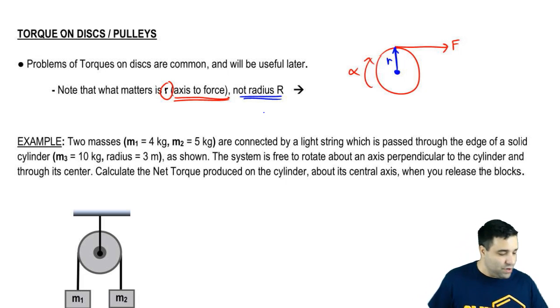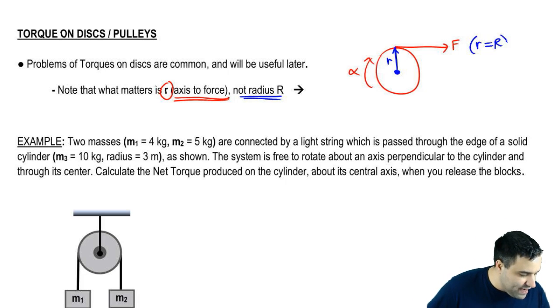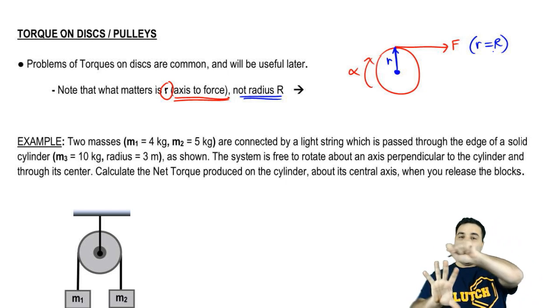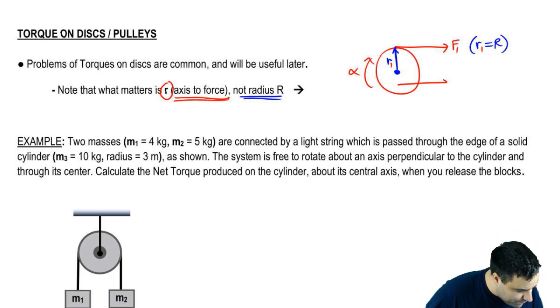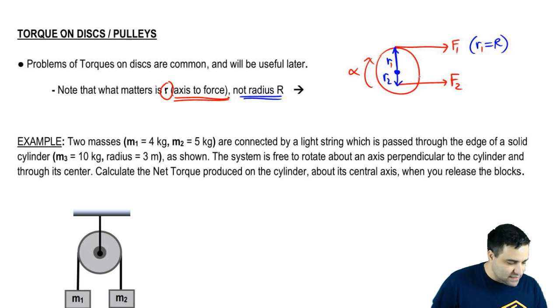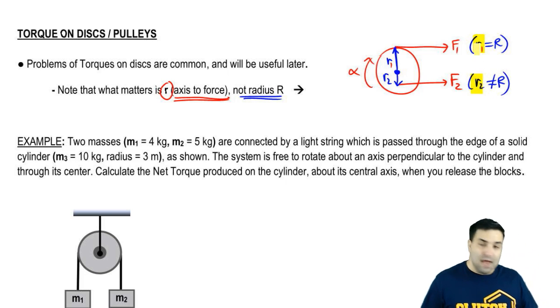Now, in this particular example here, little r is the same as the radius because the rope pulls on the disc at the edge of the disc. But let's say if you had, let's call this F1, R1, so R1 is the radius. But let's say you were pulling with another force right here, F2. In this case, the force doesn't pull from the edge. So what matters is not the radius of the disc, but in fact what matters is the distance. In this case, R2 is not the radius. So what's always going to matter is the distance. Most of the time, the distance will be the radius of the disc, but sometimes it won't be.